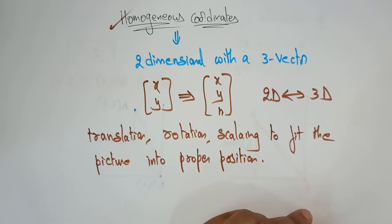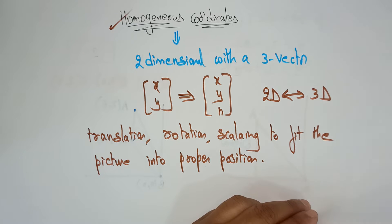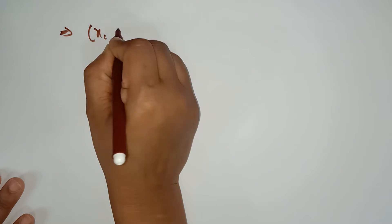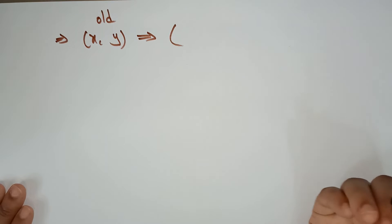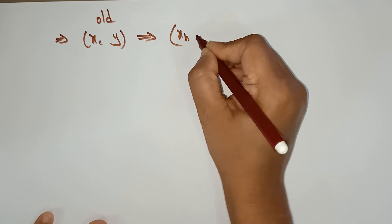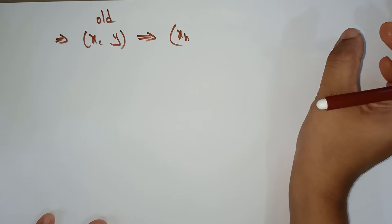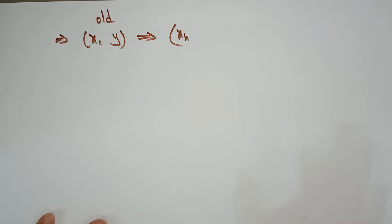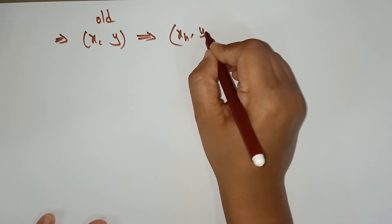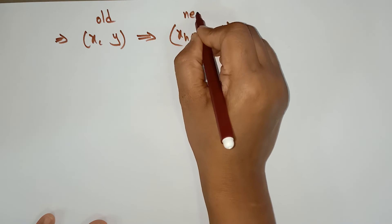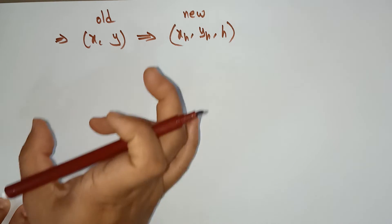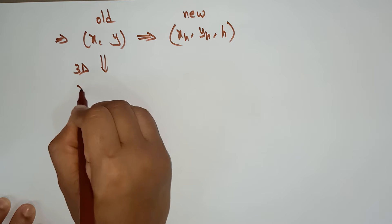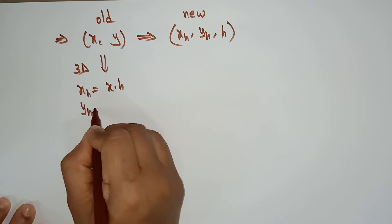Let's discuss how a 2D object is converted into a 3-vector. Even though it is converted into a 3-vector, the value is not going to change. Let me take the old coordinate, which is two-dimensional: X, Y. I want to change this into a new object by adding one more vector so it becomes 3 coordinates. The new homogeneous values are: XH = X × H, and YH = Y × H.